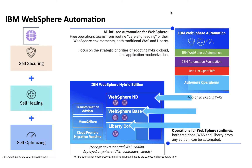With WebSphere Automation, we're delivering these self-securing, self-healing, and self-optimizing capabilities across the entire set of WebSphere Application Server runtimes. Earlier this year, we announced the WebSphere Hybrid Edition, which basically includes all of our WebSphere editions — WAS ND, Base, Liberty Core — as well as a full set of modernization technologies: Transformation Advisor, Mono2Micro, and Cloud Foundry migration runtime. WebSphere Automation will help you manage those runtimes irrespective of what edition or version you are running. As long as you're running a supported WAS edition — meaning 8.5.5, 9.0.5, or Liberty — regardless of whether it's deployed in VMs or containers, WebSphere Automation will work with those runtimes to help reduce operational cost.